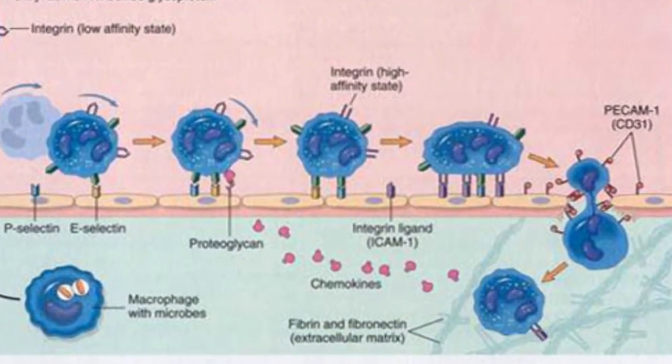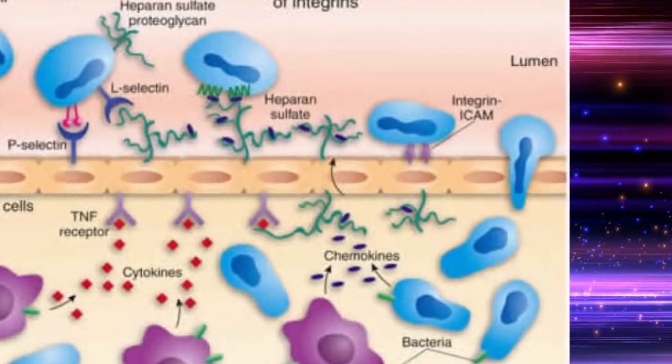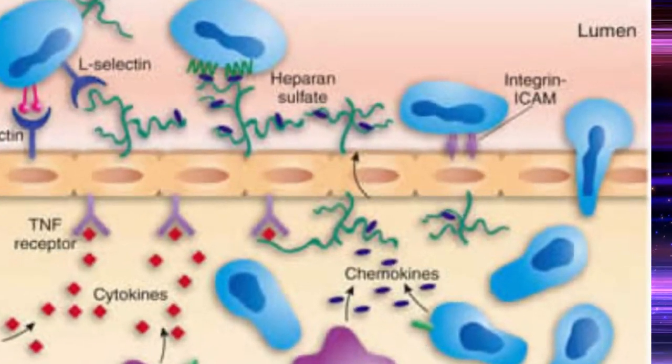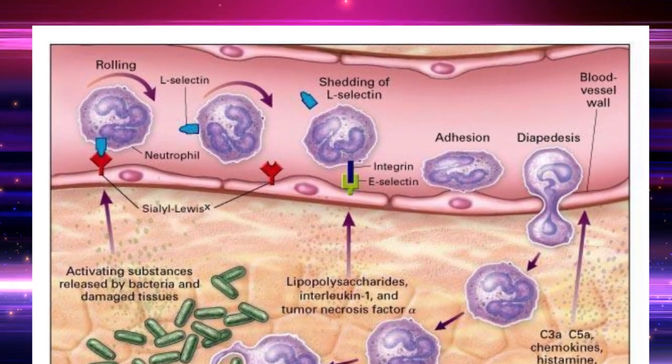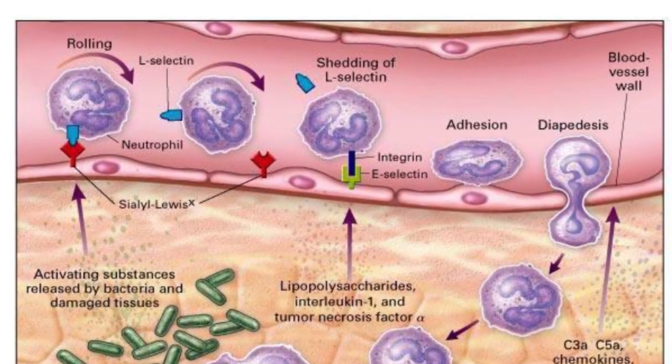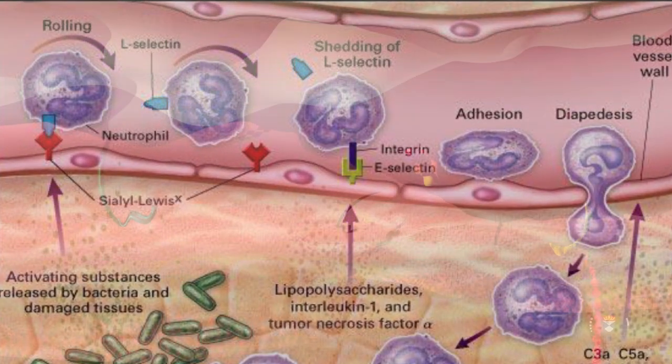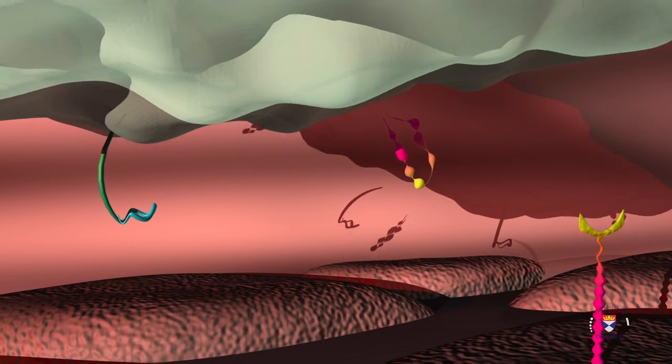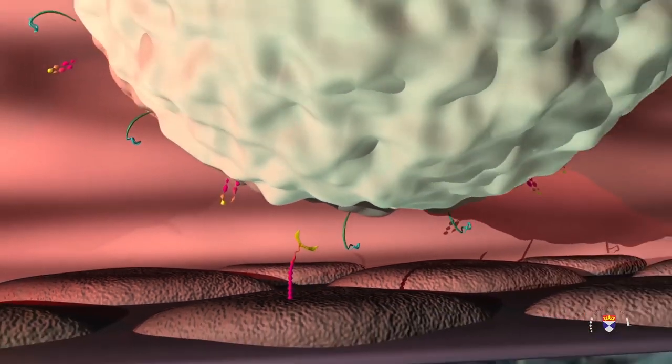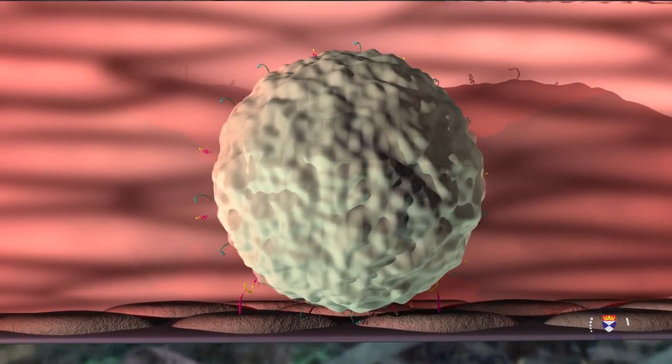Adhesion: This adhesion is mediated by integrins expressed on leukocyte cell surfaces interacting with their ligands on endothelial cells. Normally integrins are in a low affinity state. During inflammation, chemokines are produced and they bind with endothelium cells, then activate endothelial cells to increase their expression of ligands for integrins. The net result of cytokine-stimulated increased integrin affinity and increased expression of integrin ligands is stable attachment of leukocytes to endothelial cells.